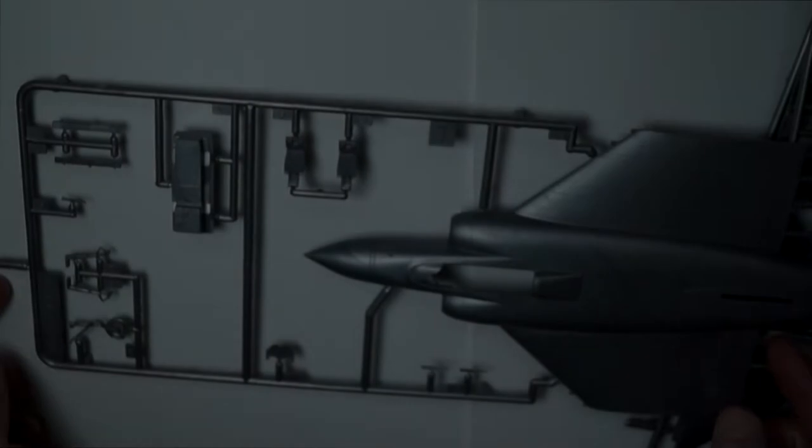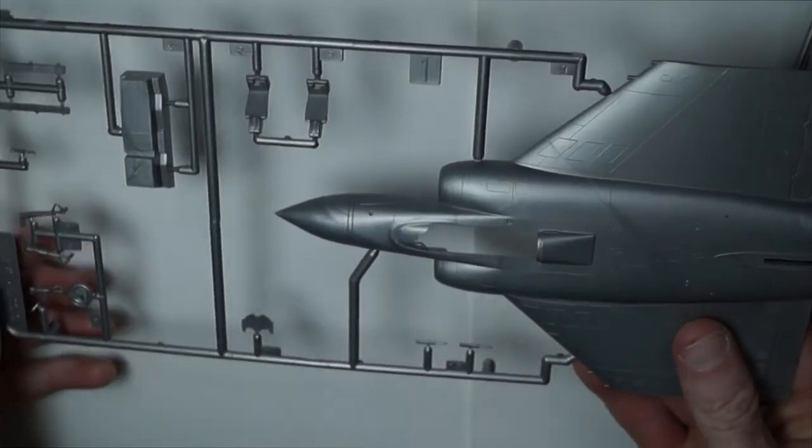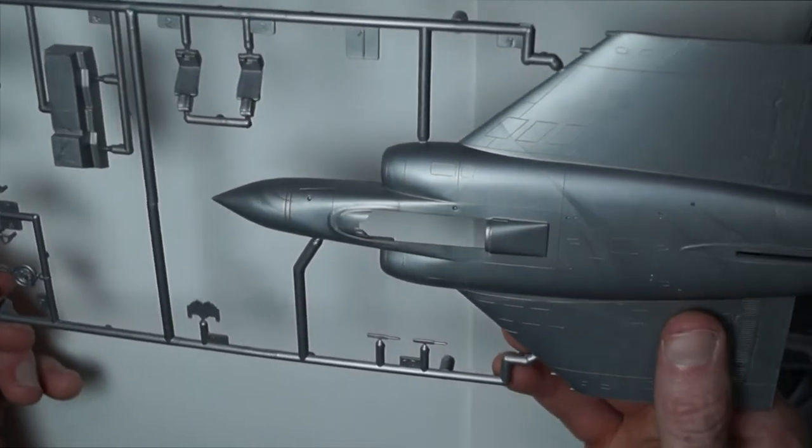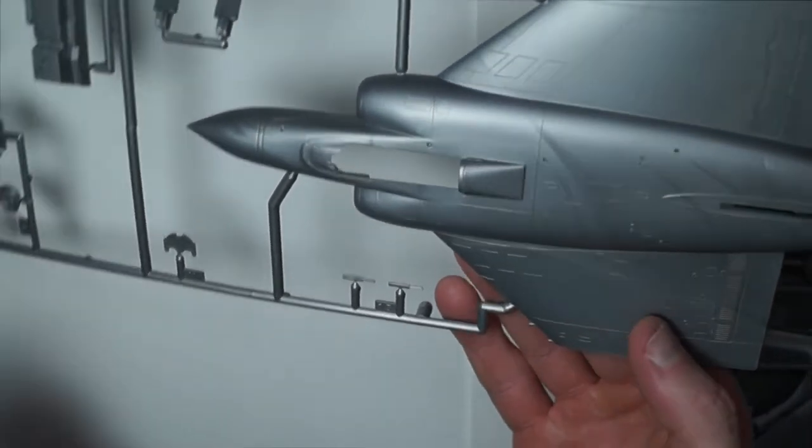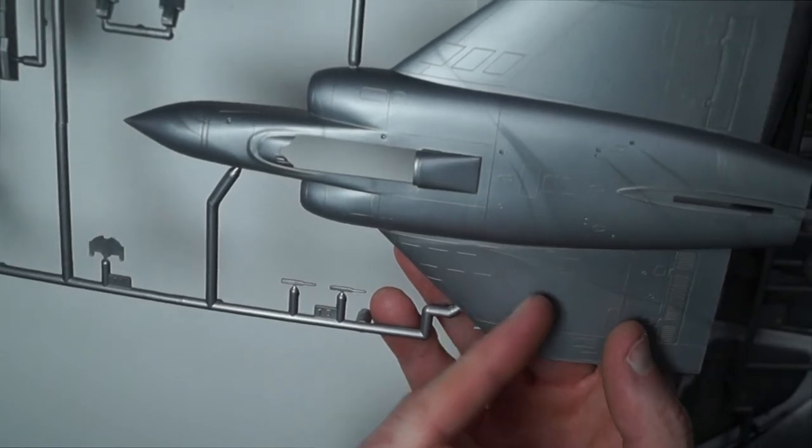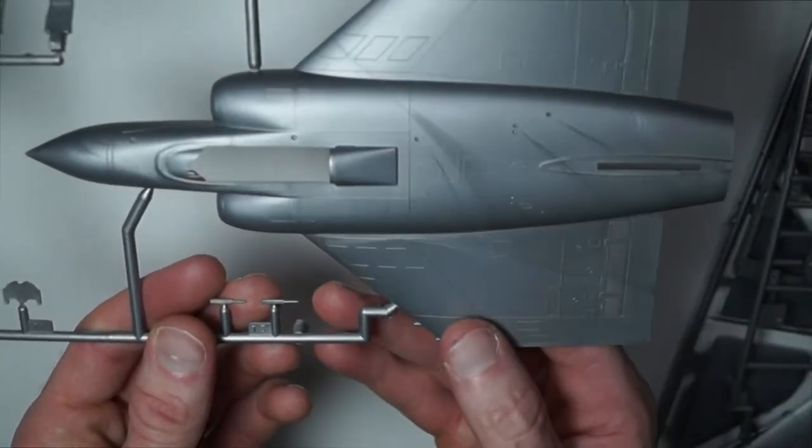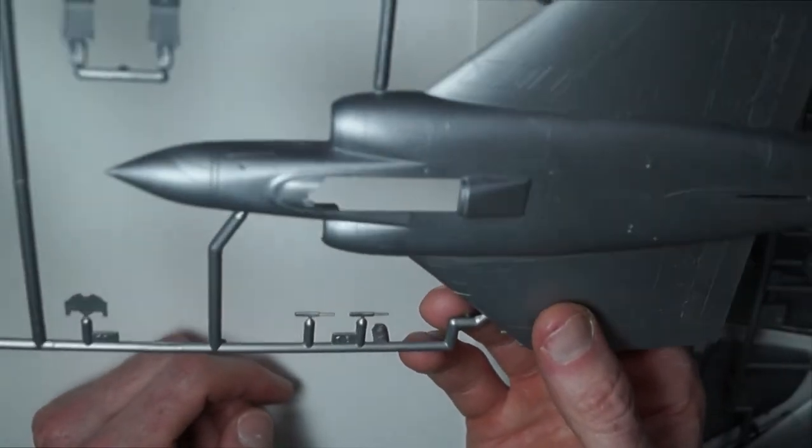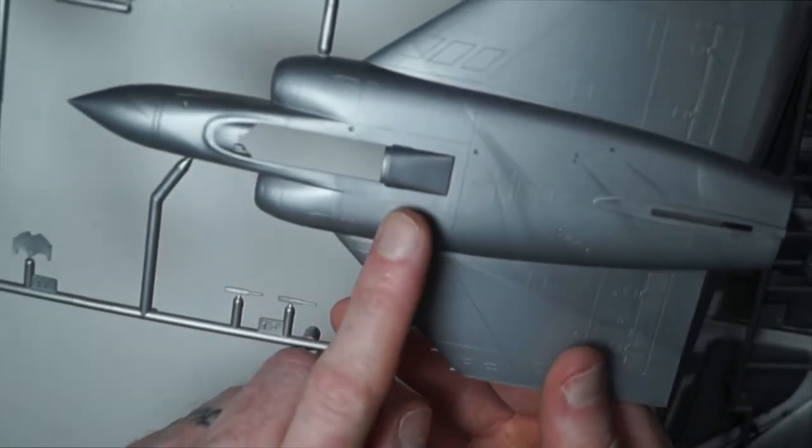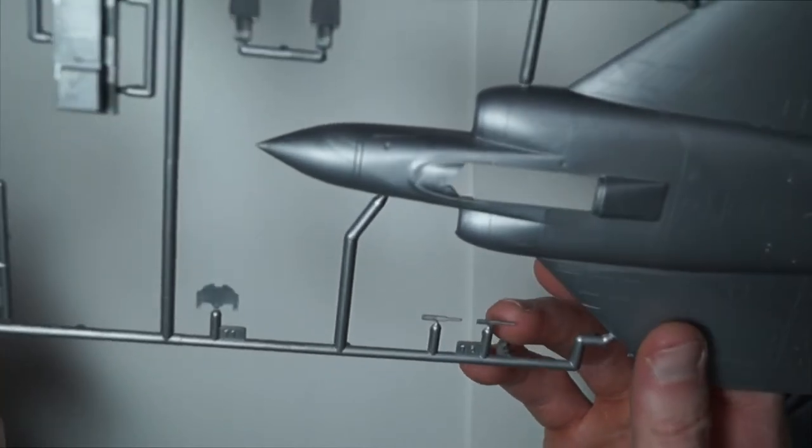I'm starting off with sprue one. The plastic has the marbling effect on it. The panel lines are raised, there are some recessed ones, so when you come round to sanding you have to be careful you don't destroy the panel lines on some parts.